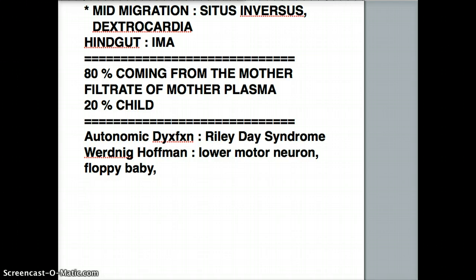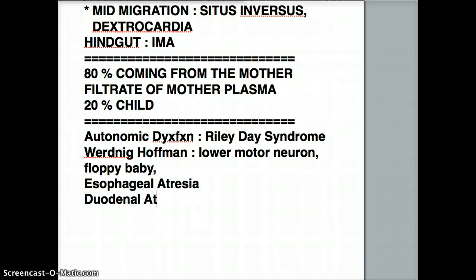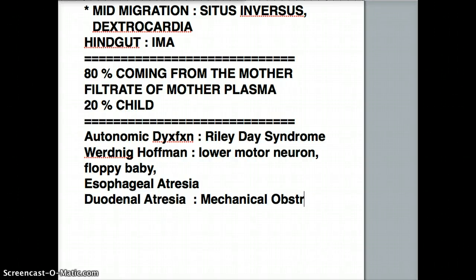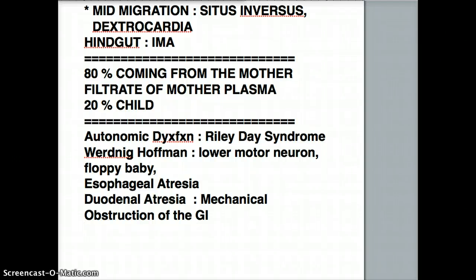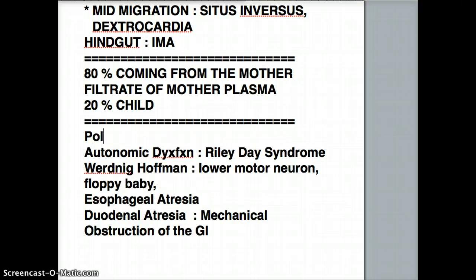The other disease associations with polyhydramnios are any kind of atresia — so there could be esophageal atresia or duodenal atresia — which can also cause obstruction. These are due to mechanical obstruction of the GI tract, which does not let the amniotic fluid pass, doesn't allow the fetus to digest it, and doesn't allow the fetus to urinate the 20%. So it's a mechanical block rather than an autonomic block like the earlier ones.